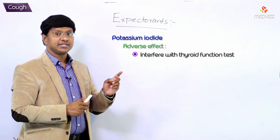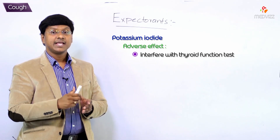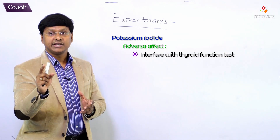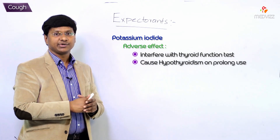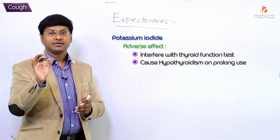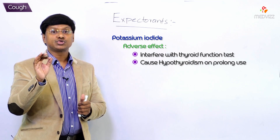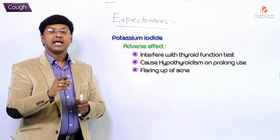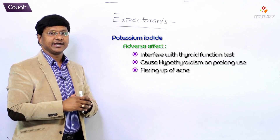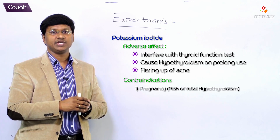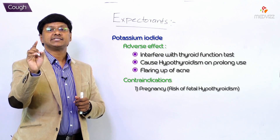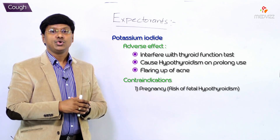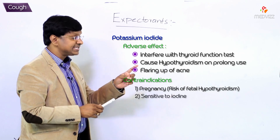Potassium iodide also acts indirectly via gastric irritation to increase bronchial secretions. However, the problem with potassium iodide is that it interferes with the thyroid function test, and on prolonged use it can lead to hypothyroidism. It may also cause flaring up of acne in adolescents, and it should not be used in pregnancy due to the risk of fetal hypothyroidism.